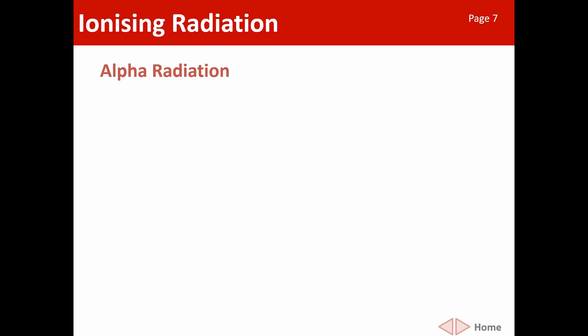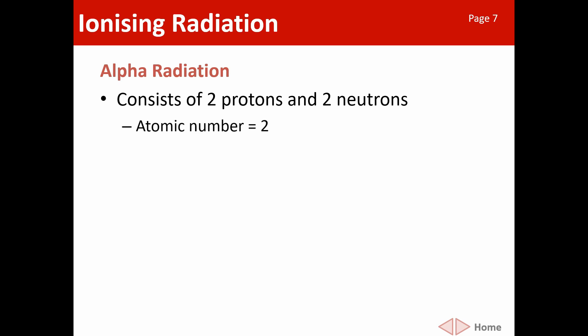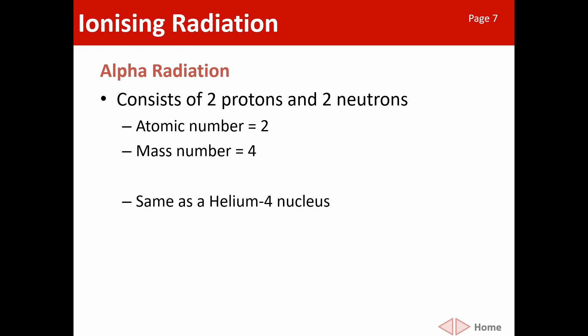We have three main types of ionizing radiation in this topic. The first is alpha radiation. Alpha radiation consists of two protons and two neutrons, giving it an atomic number of two and a mass number of four. It's the same as a helium nucleus, but it doesn't have any electrons — it's just a particle that splits off from an unstable nucleus, taking some energy with it.